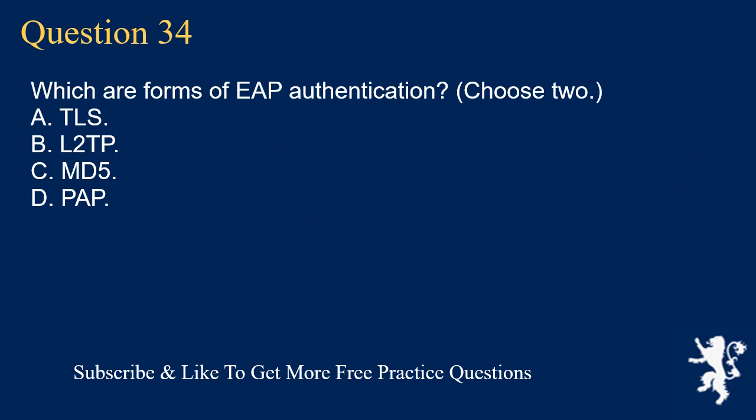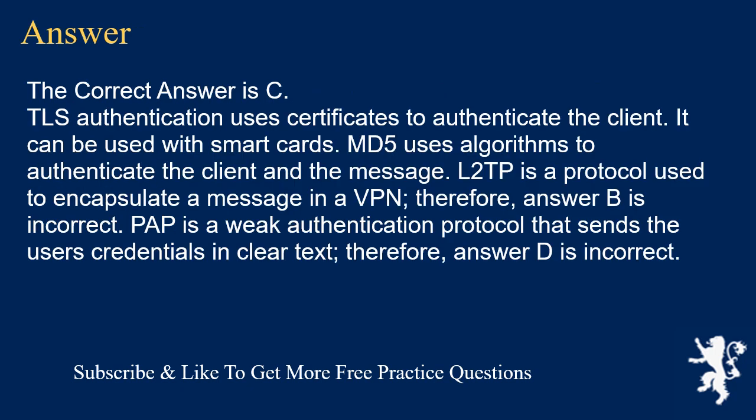Question 34. Which are forms of EAP authentication? Choose 2. A. TLS. B. L2TP. C. MD5. D. PAP. The correct answers are A (TLS) and C (MD5). TLS authentication uses certificates to authenticate the client and can be used with smart cards. MD5 uses algorithms to authenticate the client and the message. L2TP is a protocol used to encapsulate a message in a VPN. Therefore, answer B is incorrect. PAP is a weak authentication protocol that sends the user's credentials in clear text. Therefore, answer D is incorrect.